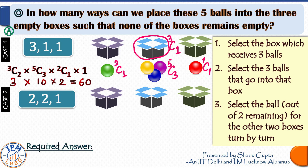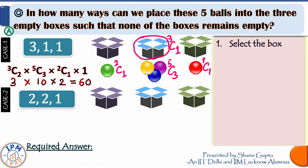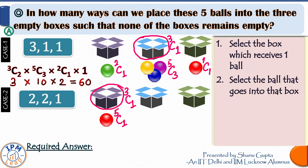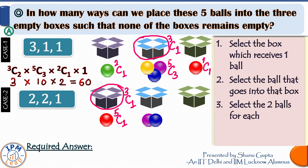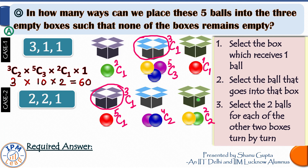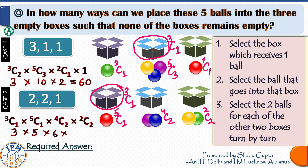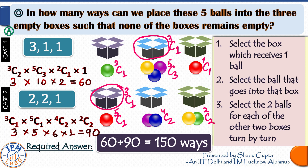In the second case, where balls are distributed two, two, and one into boxes, we first select the box which receives one ball — 3C1 ways. Next we select that ball which goes into this box — 5C1 ways. Out of the four remaining balls we select two balls for one of the other boxes — 4C2 ways — and the two balls left go into the third box — 2C2 = 1 way. Together: 3C1 × 5C1 × 4C2 × 2C2 = 90 ways. Therefore our required answer is the sum of these two cases: 60 + 90 = 150, and as you can see our answers tally from both approaches.